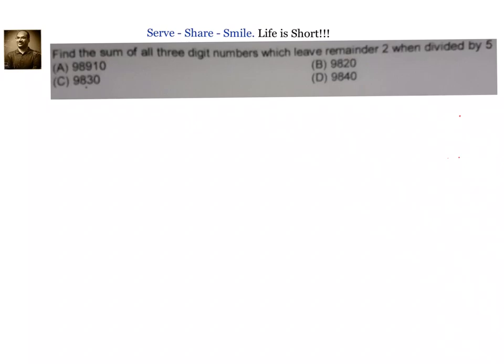In the first method, we will not find out the sum but will try to understand, based on the options given, which one is correct. If we look at the options carefully, only option A is more than ten thousand; the remaining options are all less than ten thousand. If I can understand that the sum will be greater than ten thousand, I can directly mark option A as the correct answer.